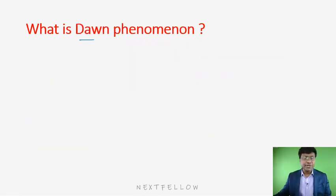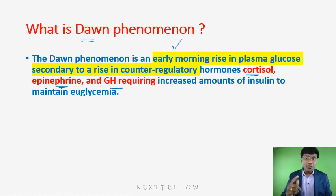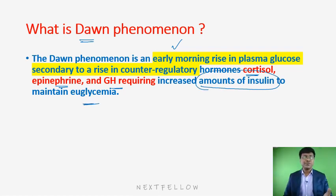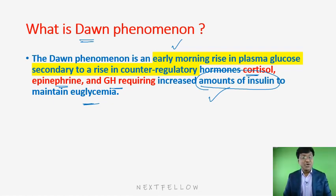The Dawn phenomenon is early morning rise in plasma glucose secondary to a rise in counter-regulatory hormones like cortisol, epinephrine, and growth hormone, requiring an increased amount of insulin to maintain euglycemia. This covers the acute complications: diabetic ketoacidosis, honeymoon period, Dawn phenomenon, and Somogyi phenomenon. Thank you very much, see you in the next video.